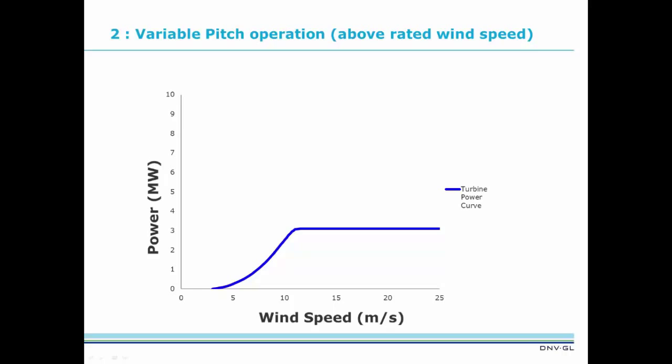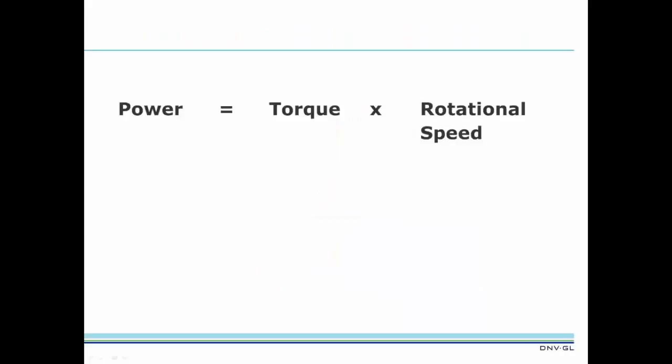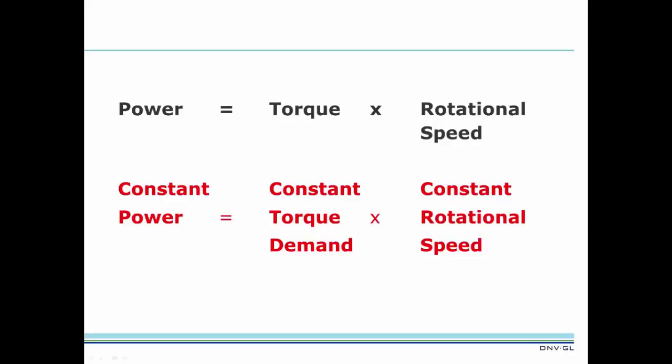Now let's look at what happens for wind speeds above rated. Here, the aim is to generate constant power output from wind of increasing energy. So how is this done? Power equals torque times rotational speed. Constant power is obtained with constant torque demand and constant rotational speed. It's easy for the turbine control system to set a constant torque demand. The challenge is to hold the rotor speed constant as well.